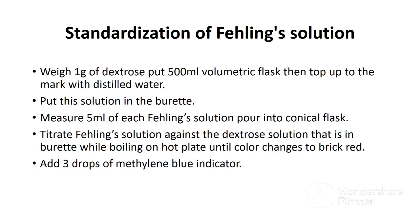The copper content of the Fehling solution varies slightly from one batch to another. It is therefore important to standardize the Fehling solution prepared in order to get the Fehling factor. This factor is used in the calculation of reducing sugars in juices. The first step of standardizing Fehling solution is to prepare a dextrose solution. Remember, dextrose solution is an invert sugar used as a standard reducing sugar.